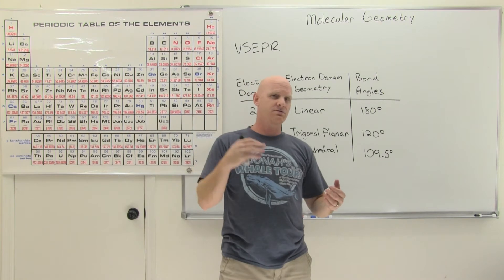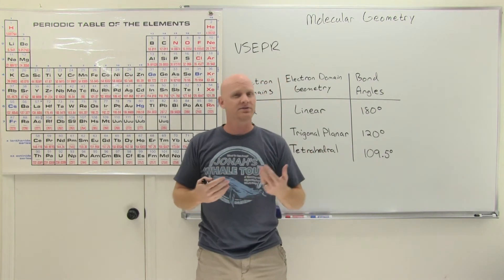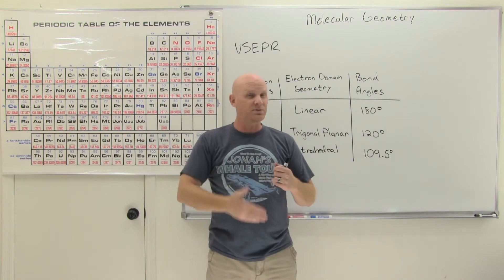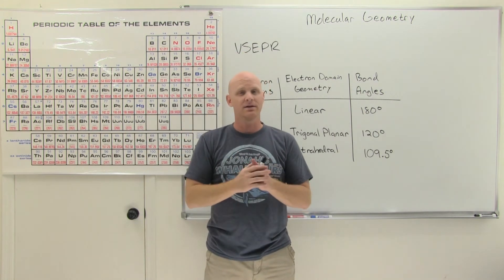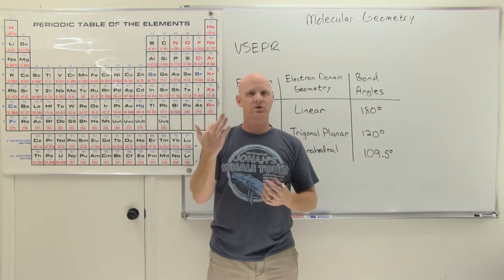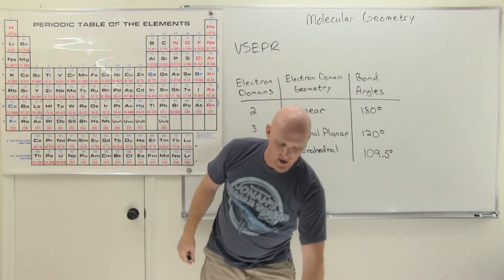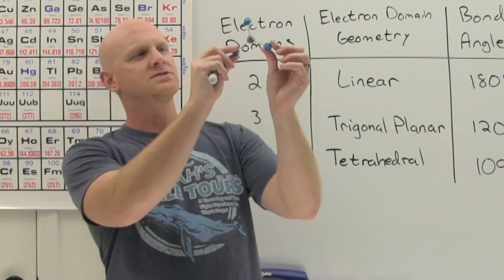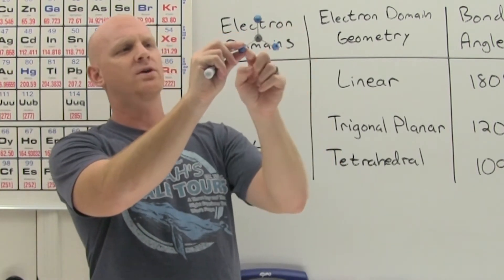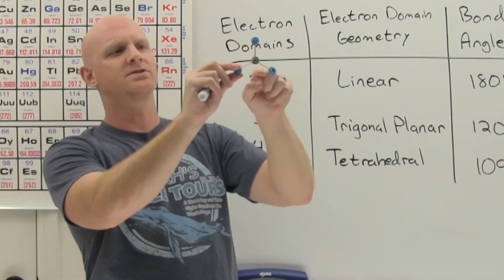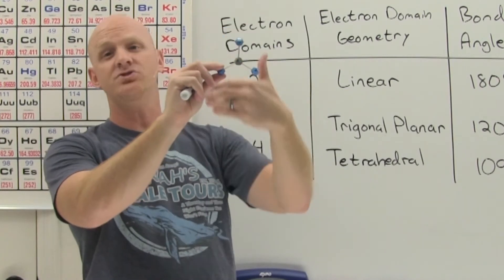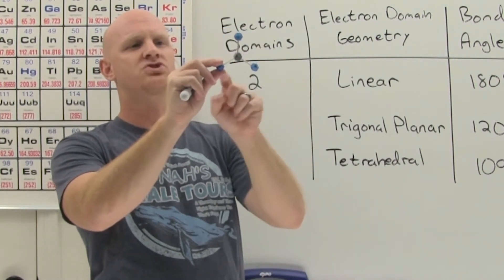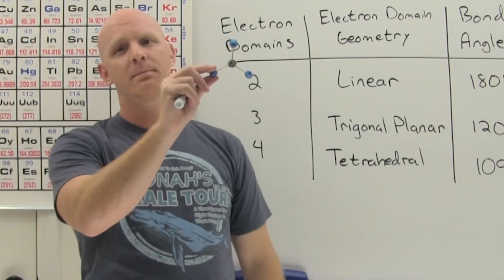With three electron domains, it's still a two-dimensional, planar structure. The three groups spread to the three corners of an equilateral triangle — I've got a little model right here — all 120 degrees apart. Because it's a planar structure at the three corners of a triangle, we call this shape trigonal planar.